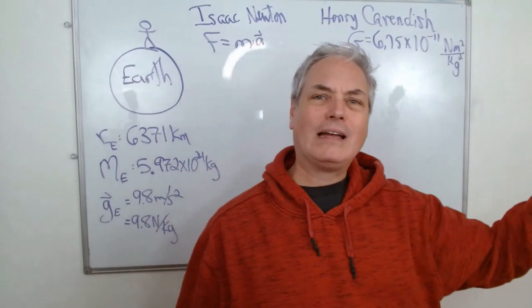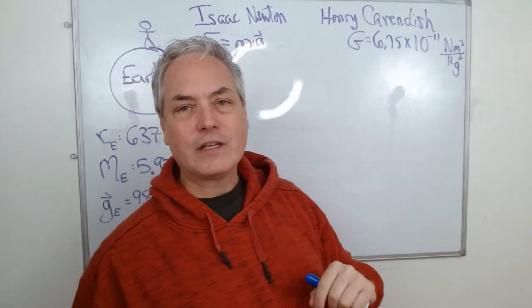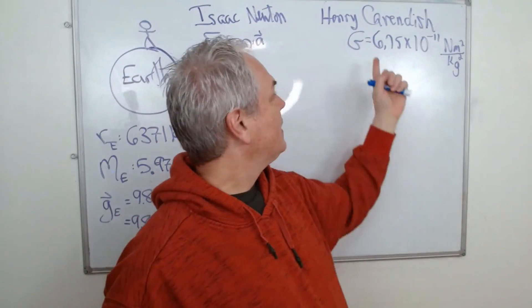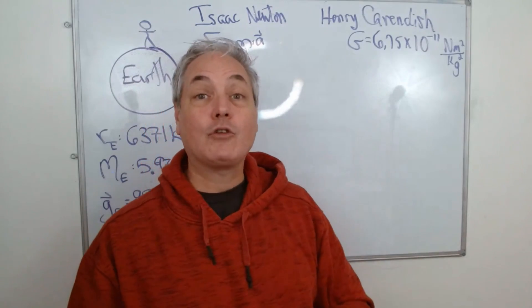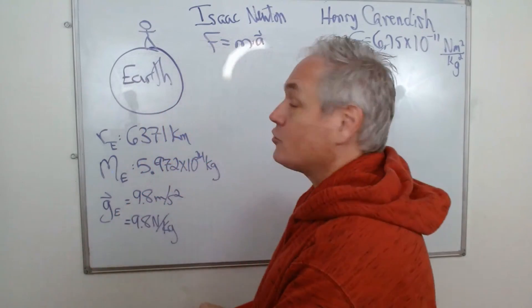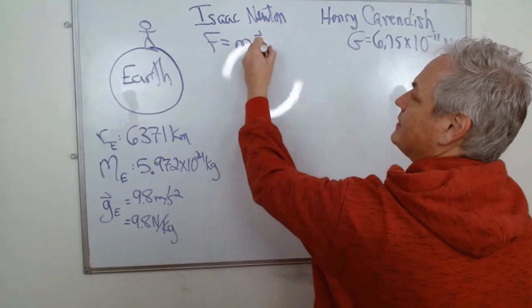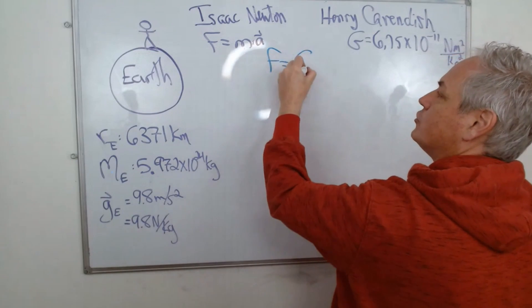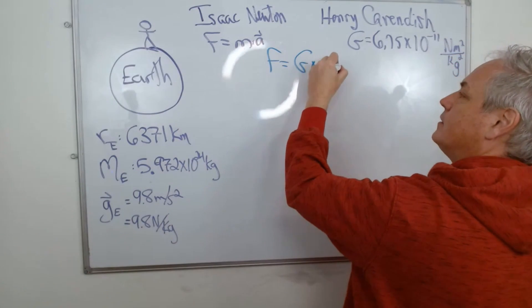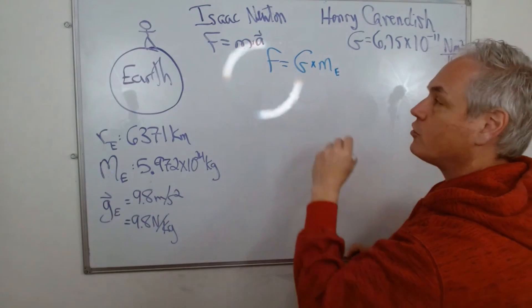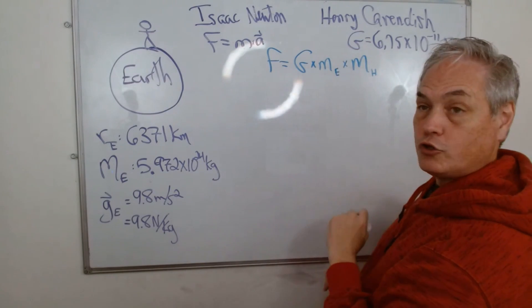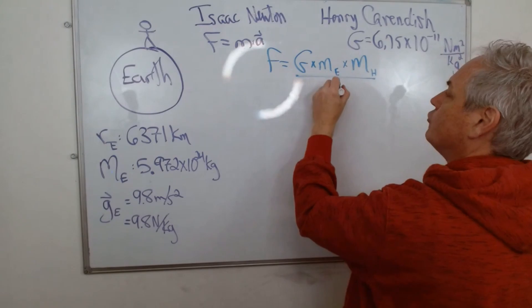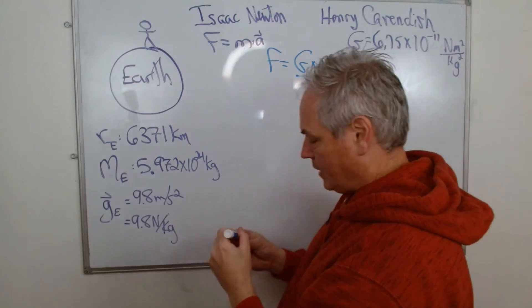So here is information that we got from Isaac Newton. On top of that, we have another scientist, maybe half a decade later. He was looking at astronomy and he came up with the first value of G, the gravitational constant.